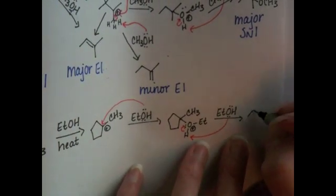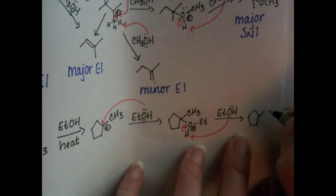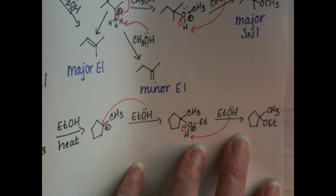The lone pair of electrons on the oxygen will pull off that proton and move the oxygen-hydrogen bonds back onto the oxygen as a lone pair. And we get our SN1, our one and only SN1 product.